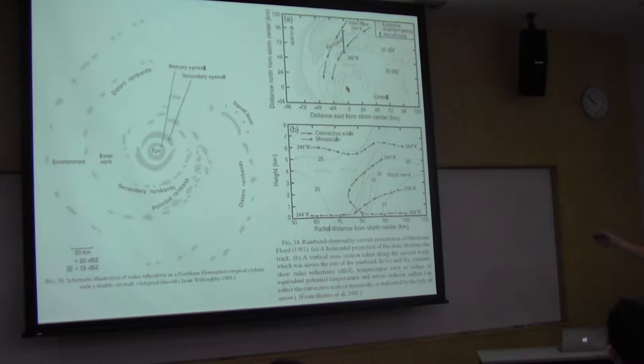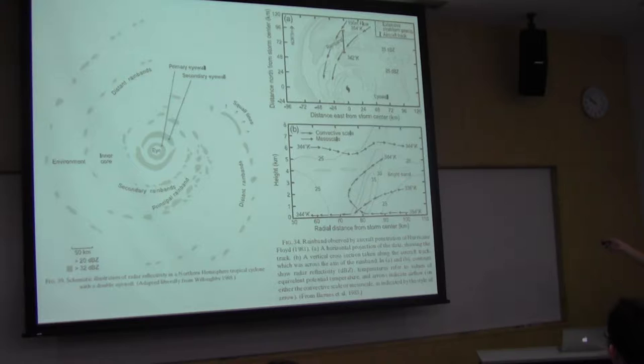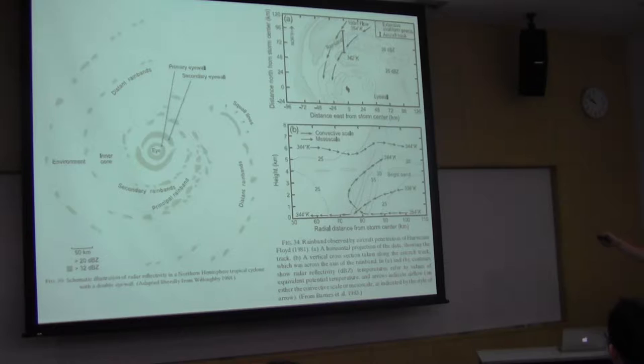So this only shows up when you have dominance of the ice processes. That's what we typically use to separate out stratiform from convective in the rain band. And then the arrows here show two different types of flow: one is the convective scale, and another is the mesoscale flow.